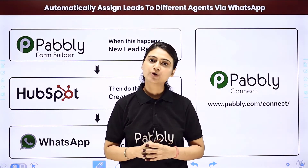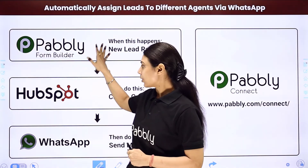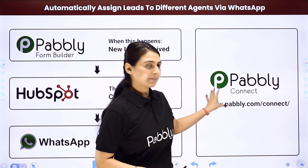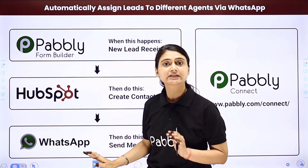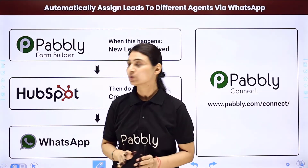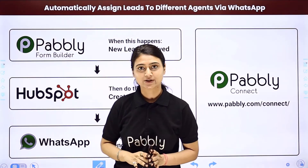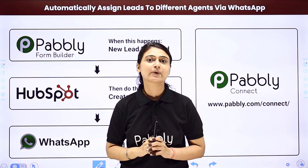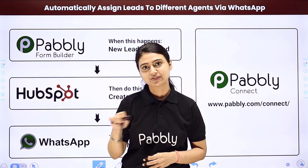So how about you try our Pabbly smart way. Here we will integrate Pabbly Form Builder with HubSpot CRM and WhatsApp Cloud API, all using Pabbly Connect. Whenever you receive a new lead, it will automatically be assigned to a designated sales representative or agent via WhatsApp. You can use the form builder application and CRM software of your choice. This entire automation process is so simple that it can even be done by a person with non-technical knowledge. You can find the workflow link below in the description box.